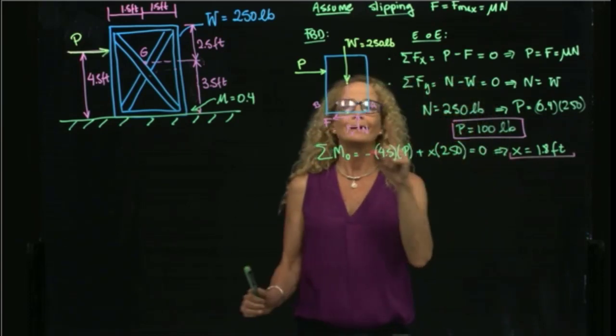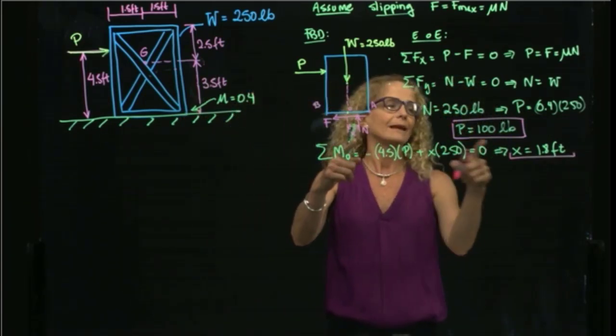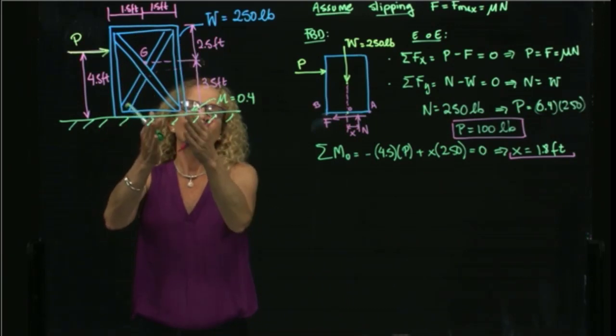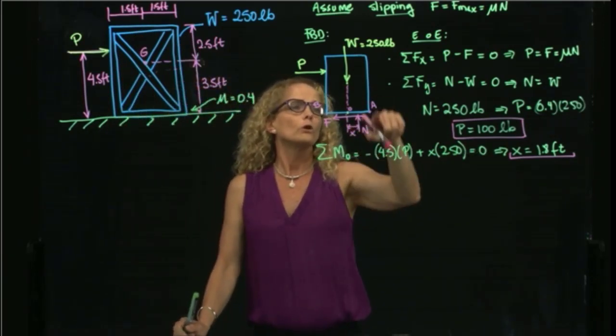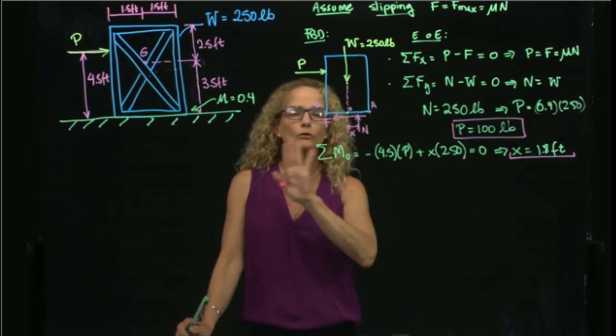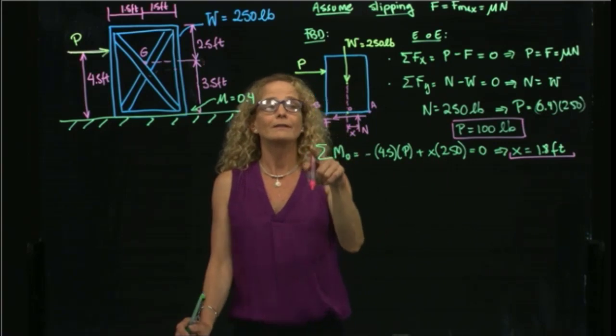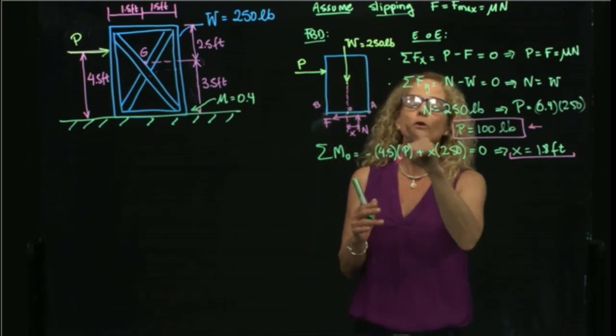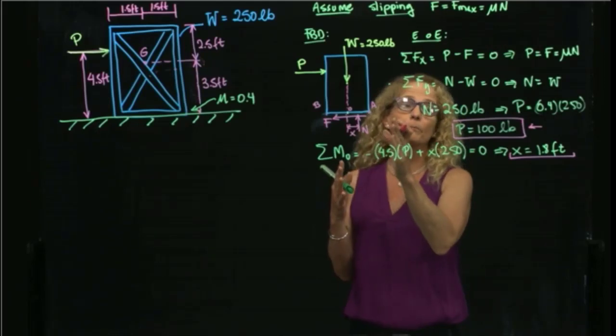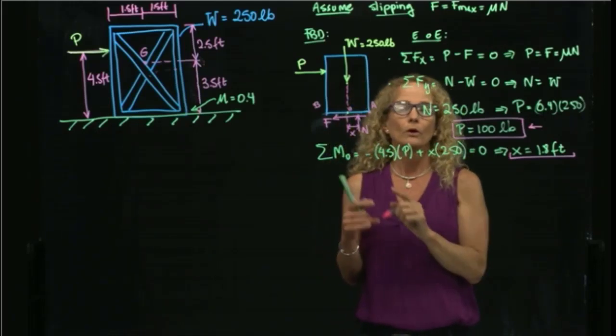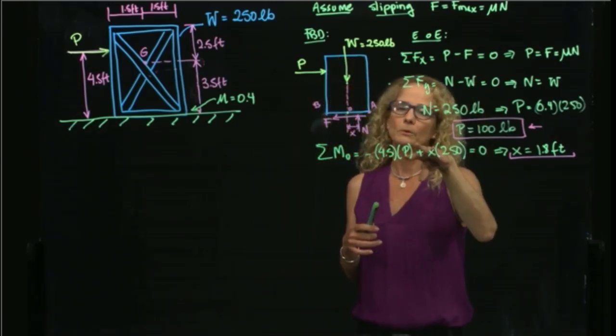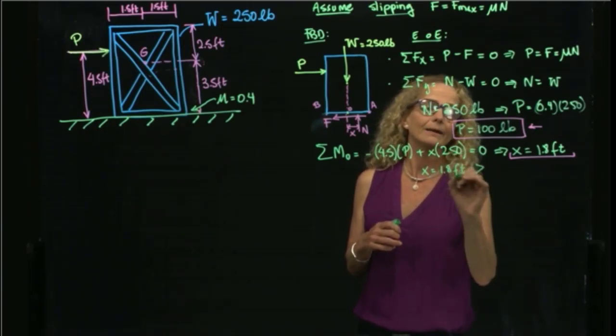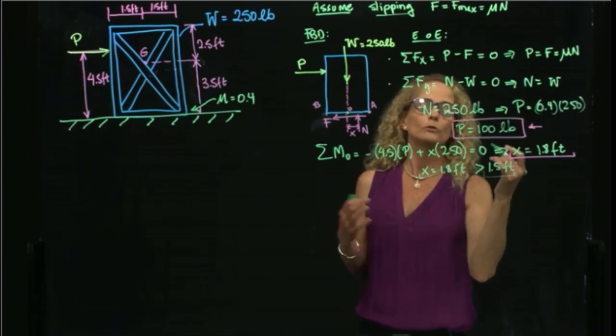as you see, when P takes a value of 100, x takes a value of 1.8. But 1.8 is bigger than the half of the crate. So it means that for those conditions, the normal force is beyond the crate. So that does not make any sense. So what we see is that this force cannot be because I already moved the normal force beyond my crate. So the maximum position where the normal force could be is at the corner. So, we know that this is not a possible case. So this x equals 1.8 feet is greater than 1.5. So, this does not make sense.